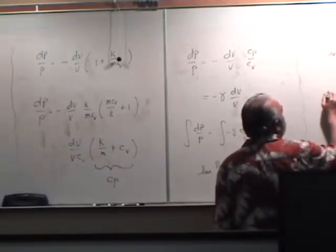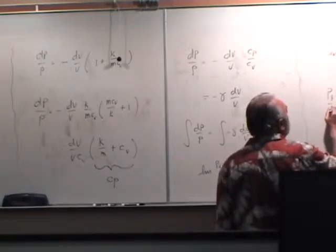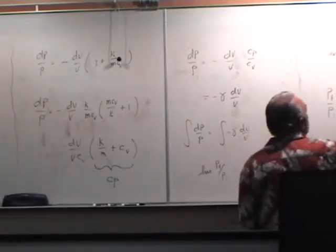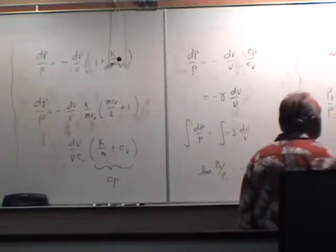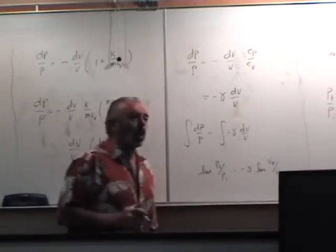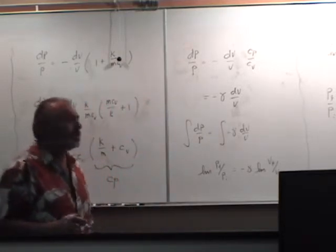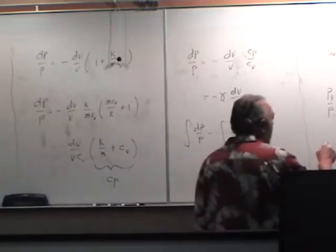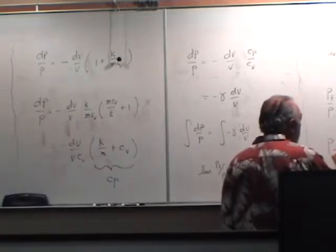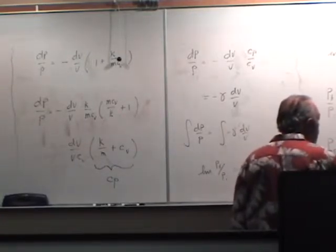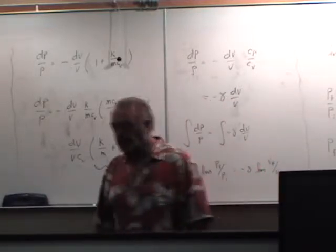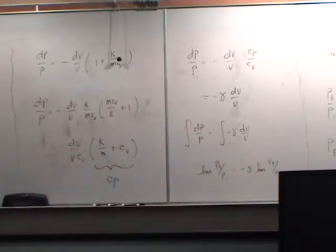Hence, therefore, P final over P initial must equal V initial to the gamma power divided by V final to the gamma power. And we've actually arrived at the location we need to be. That is, P final, V final to the gamma power equals P initial, V initial to the gamma power.